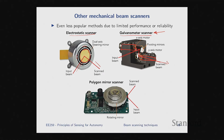Finally, the polygon mirror scanner has a rotating polygon with mirrored faces. As it rotates at some angular velocity, the output beam scans in one direction — 1D scanning, typically azimuth. It's cheap and robust but not very configurable. You can use two of them for more axes, but typically you get only one axis of scanning.